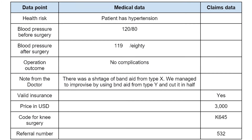However, there are also significant differences between medical data and claims data with regards to the same event. In the next table, we can see that certain medical information is entered and stored that is relevant for medical purposes. Note that the medical information in this example is unstructured. We can also see that a note from the doctor is entered in the form of natural human language and also contains typos.